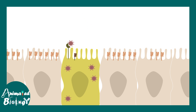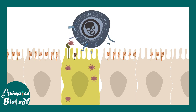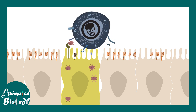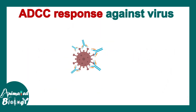But the immune system has a fail-safe mechanism. NK cells scan for class I MHC molecules, and when they don't find them — or they understand that MHC molecules are downregulated — they decide to engage and thereby eliminate cells containing viruses.